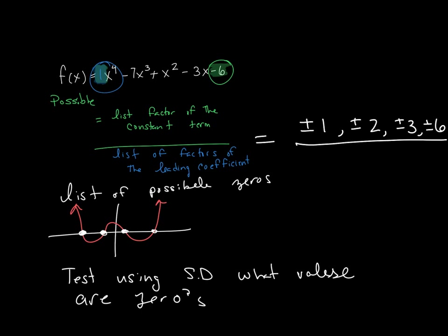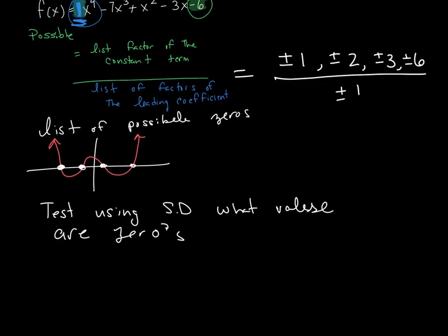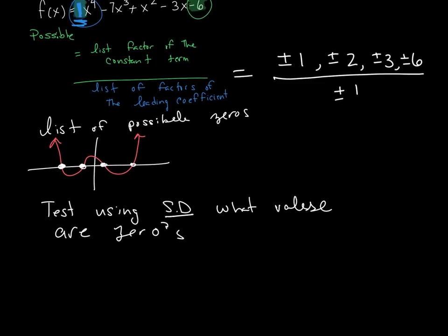So the constant term is 6. The possible factors for 6 would just be plus or minus 1, plus or minus 2, plus or minus 3, or plus or minus 6. And the possible factors for the leading coefficient, this isn't bad because this leading coefficient is again 1, so that's just going to be plus or minus 1. So what are the numbers that we have to test using synthetic division? We have to test all of them: plus or minus 1, plus or minus 2, plus or minus 3, plus or minus 6.